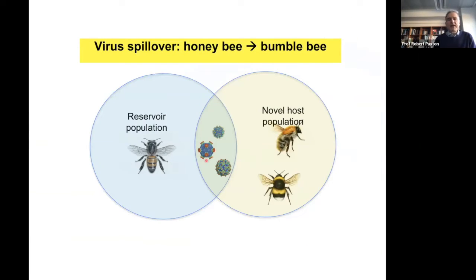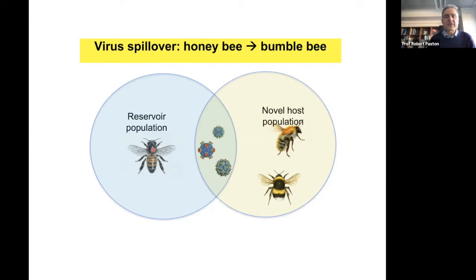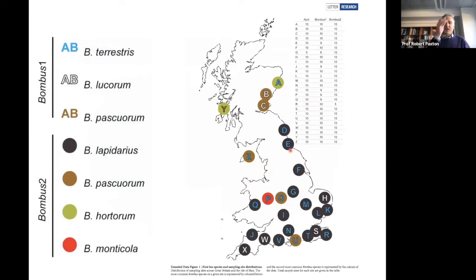We've got honeybees as a reservoir population, almost certainly for deformed wing virus, probably also for black queen cell virus — the most prevalent virus we regularly find in honeybees, though seemingly not particularly virulent and not transmitted by varroa mites. At flowers, they may be interacting with other bees, for example bumblebees, that can act as recipient or alternative hosts. To what extent is that happening? I'm going to refer now to some older data.